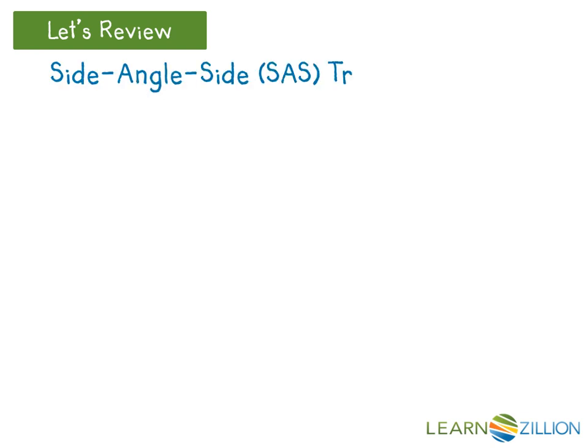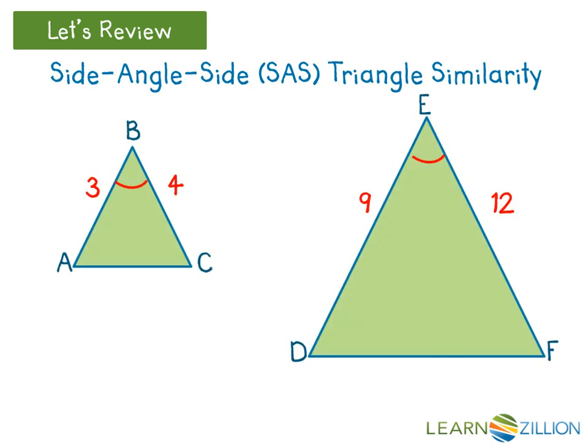Side-angle-side triangle similarity is proven when two sides from one triangle form a proportion with two sides from another triangle, while the included angles from each triangle are congruent. In the figure, we can show that there is a proportion that compares two sides from one triangle with two sides from another triangle. Since 3/9 and 4/12 reduce down to 1/3 each, they equal each other, making them a proportion.